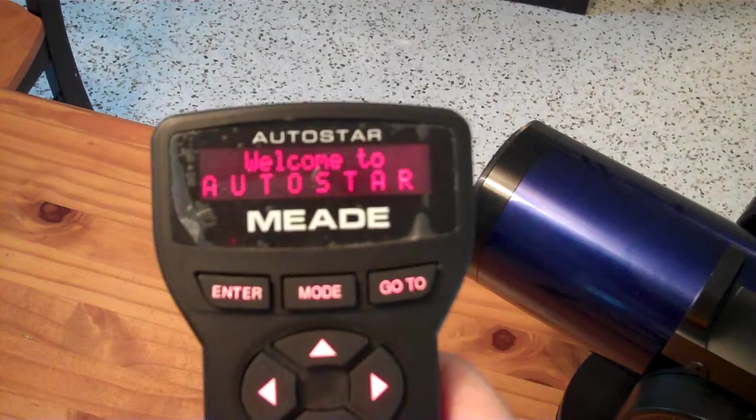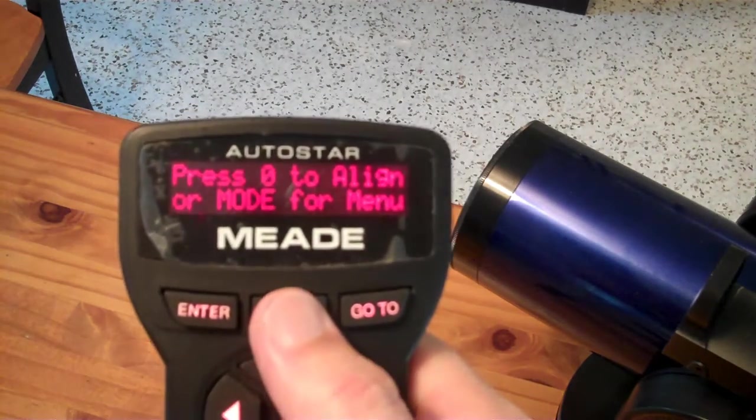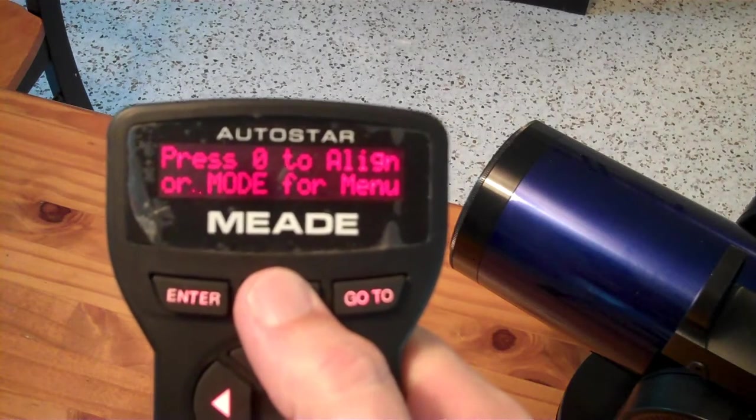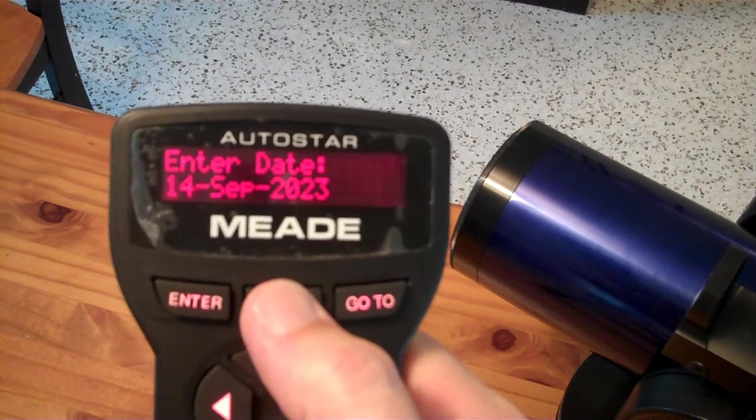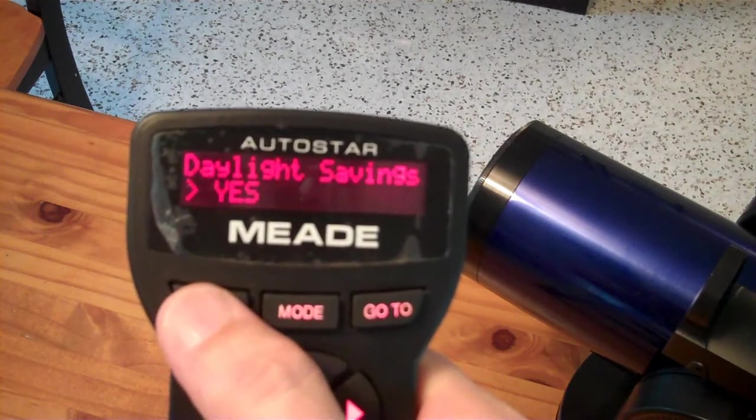So if your real-time clock isn't working, when you go to mode for the menu, it's going to say getting the time and then immediately goes to enter the date and you have to enter the date and the time and the time zone.